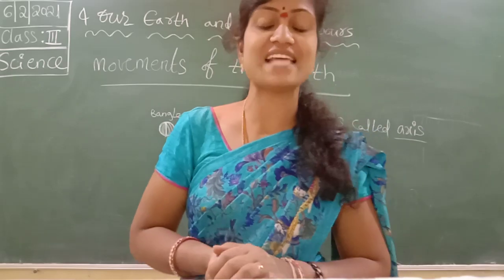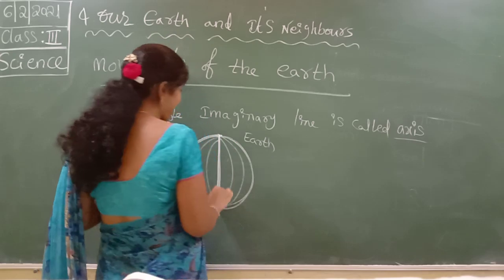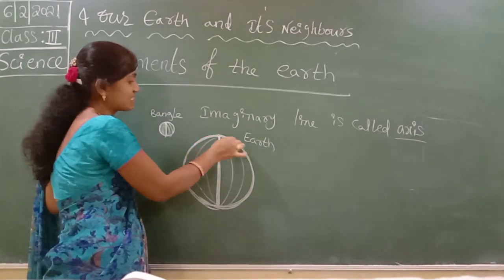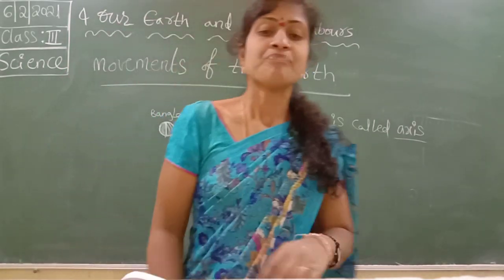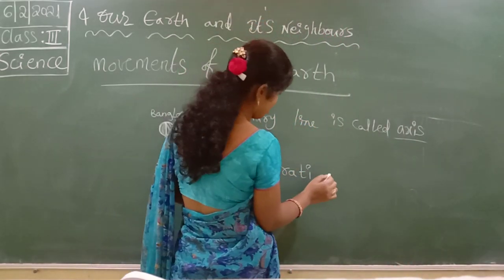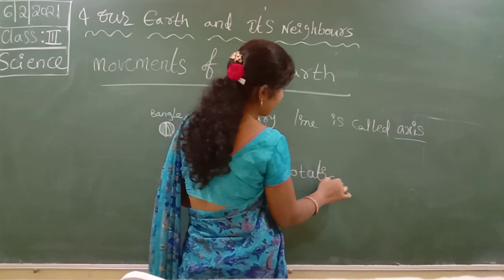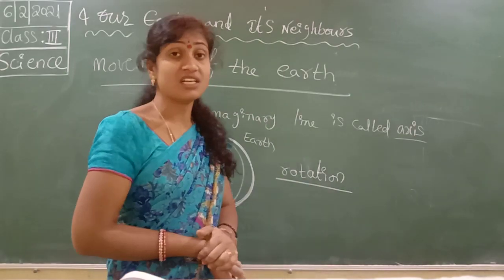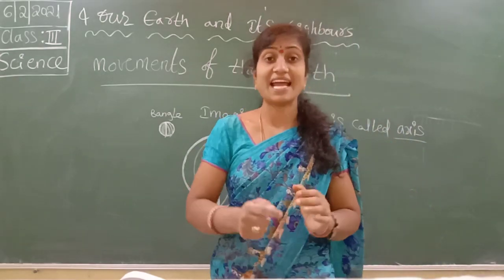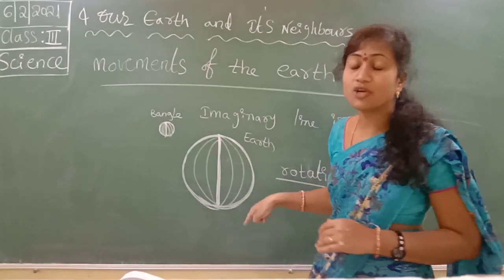Similarly, the Earth spins on its axis. Same as the bangle, our Earth also spins on its axis. This movement is called rotation. The Earth spins on its axis — this is called rotation.